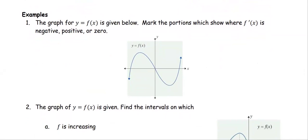For this example, the graph of y = f(x) is given. Mark the portions where the derivative f′ is negative, positive, or zero. Recall that f′ is the slope of the tangent line. From left to right, the graph is increasing until it hits the turning point at the top, then falls down, and then turns to increase again. Therefore, we mark f′ as positive on the first rising portion, f′ as negative between the two turning points, and f′ as positive again on the final increasing portion.